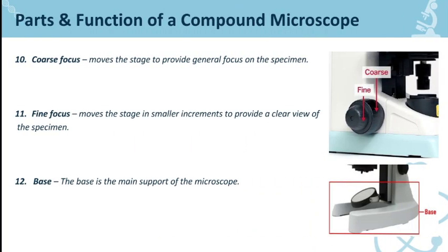Number ten is the coarse focus. It moves the stage to provide general focus on the specimen. Makikita natin dito sa image yung coarse focus knob which helps us to move the stage in order to provide a focus on the specimen or doon sa may mismo object — doon tayo nakikita yung organisms sa compound microscope.